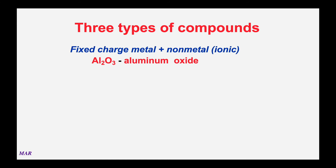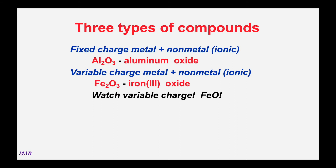As an overview, there are three types of compounds. First, fixed charge metal plus non-metal—those are ionic compounds that do not use Roman numerals or Greek prefixes. For example, Al2O3—aluminum is on the stairs, oxygen is negative two—aluminum oxide is the name. Second, variable charge metal plus non-metal—these are also ionic bonding, but with these you do want to use a Roman numeral. With fixed charge metals, everyone knows aluminum is positive three, but with variable charge metals, you'd need the Roman numeral.